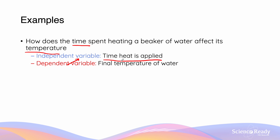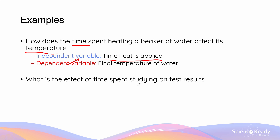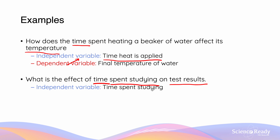We can look at another example: what is the effect of time spent studying on test results? We're looking at the effect of time — however, this time it is time spent studying — and we are seeing what the effect is going to be on the test results. So our independent variable will be time spent studying, and our dependent variable is going to be test results.